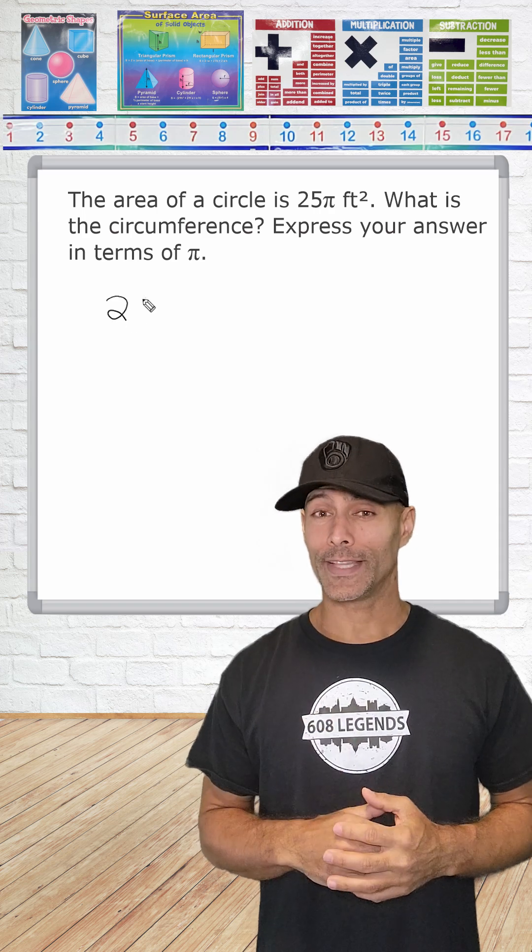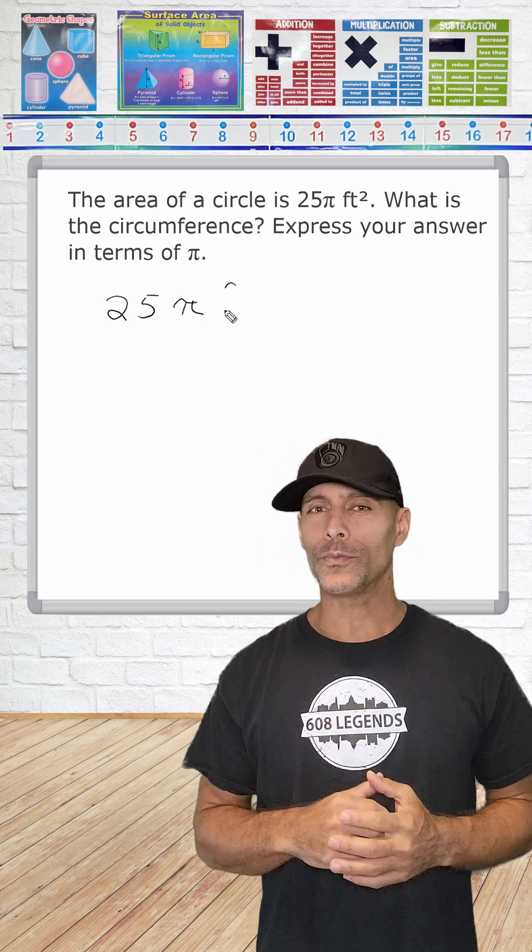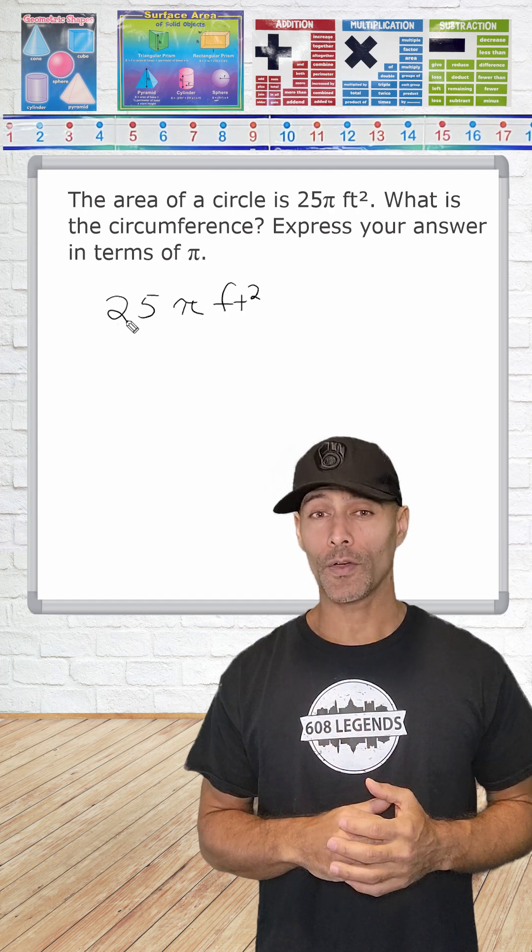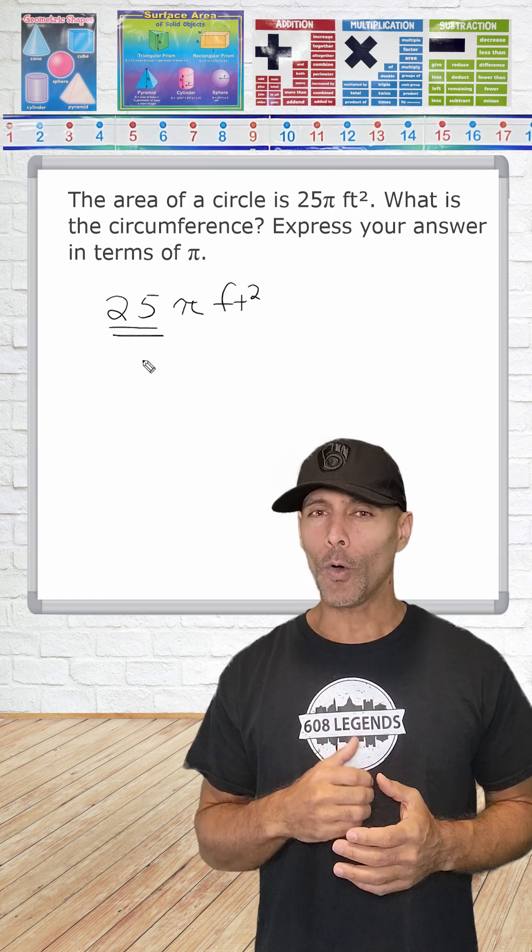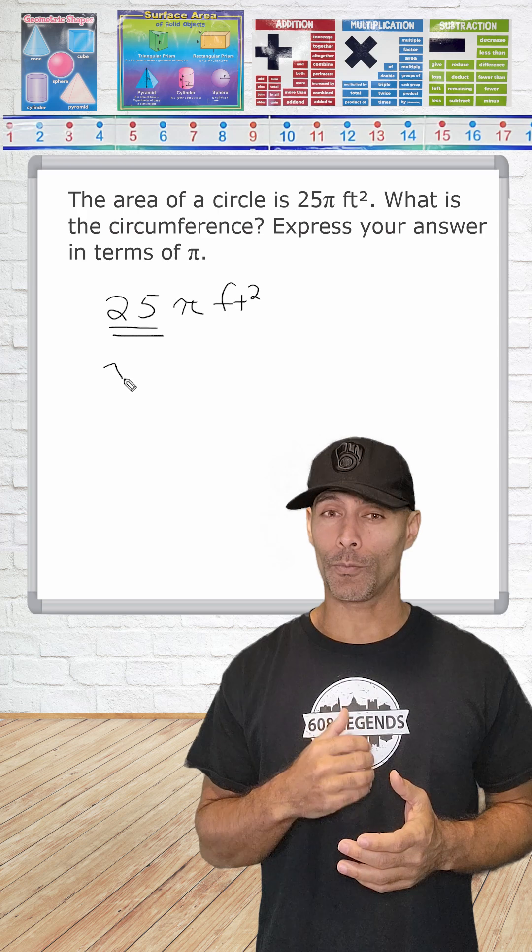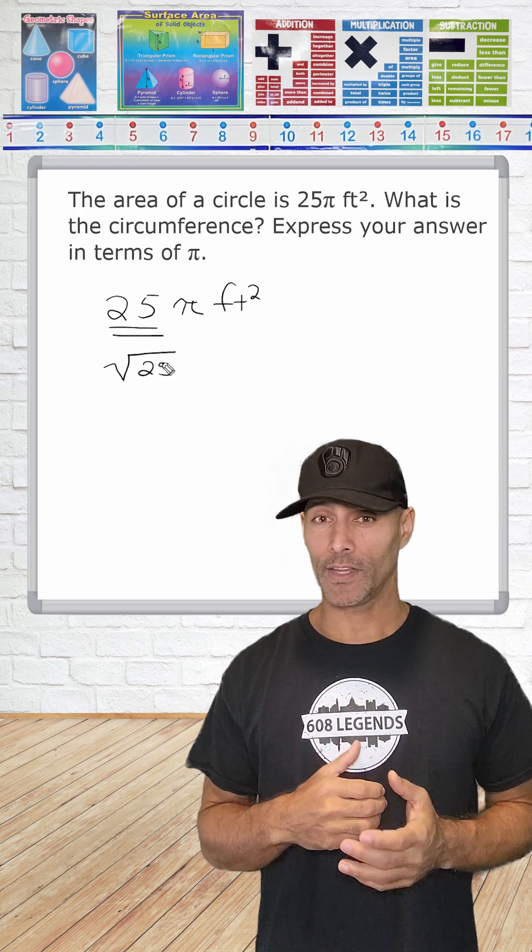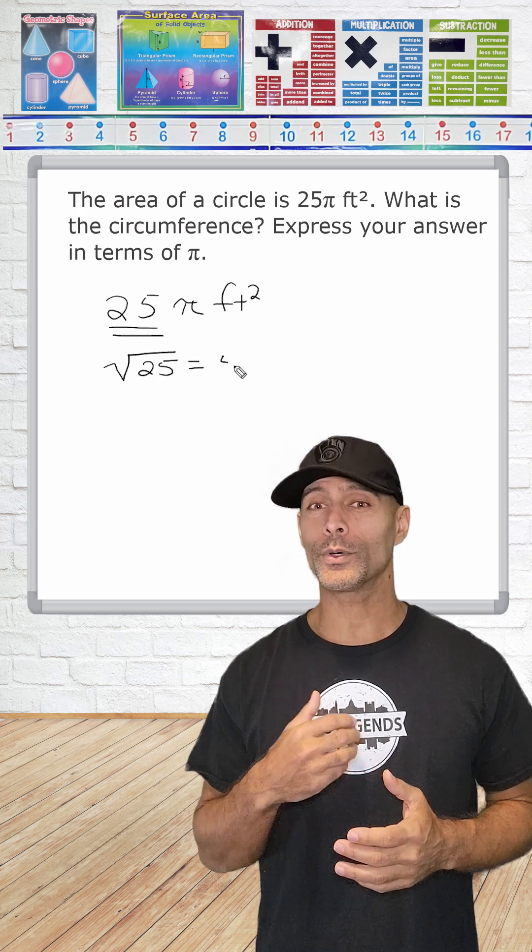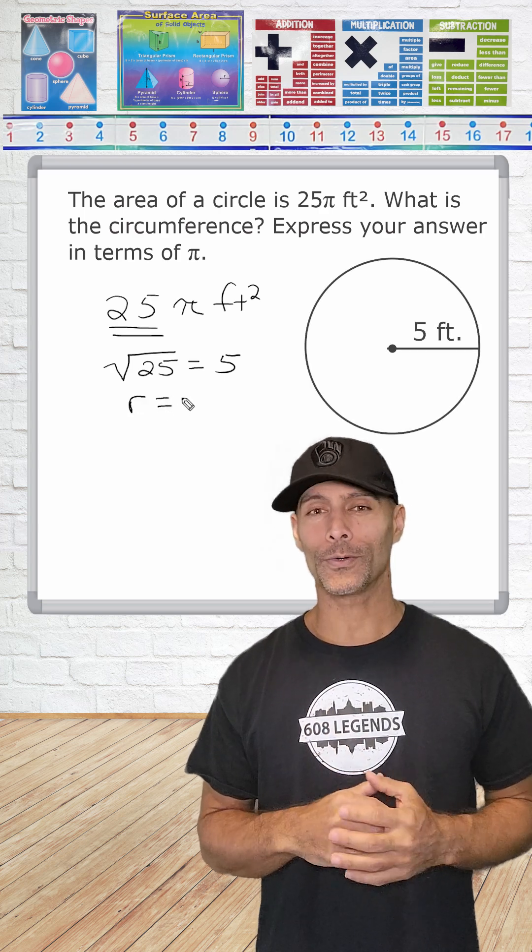So if you are ever given the area of a circle in terms of π, the number in front of π is just the result of squaring the radius. So all you really have to do is take the square root of that coefficient, in this case, take the square root of 25, which is equal to 5. That gives you the radius of the circle.